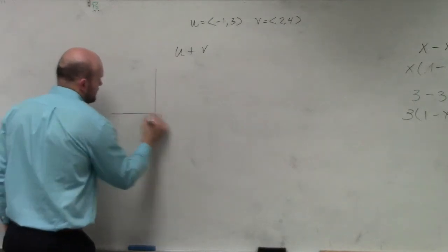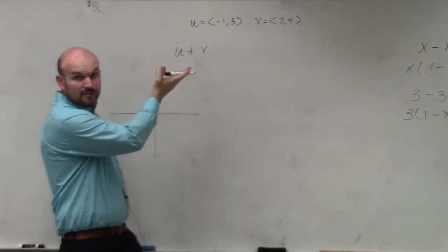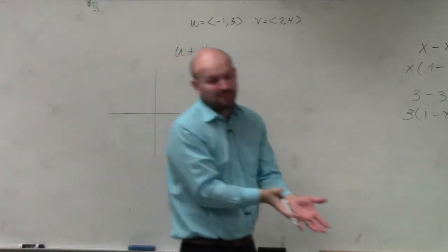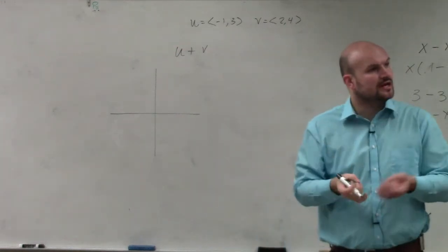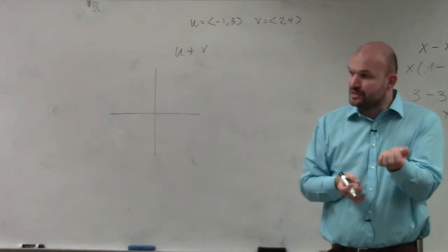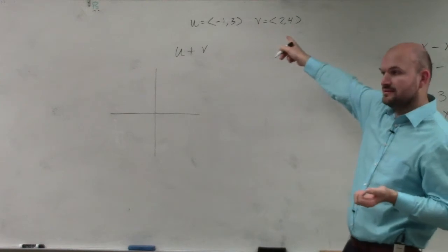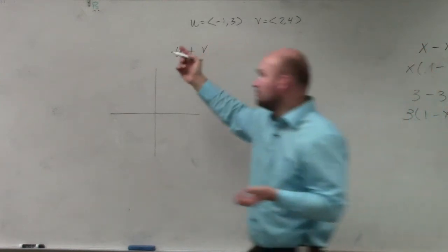So if we were going to go and graph these, again, these are in component form, right? We know component form, if you remember from last class, is a vector where we have our initial point at 0,0, and then our endpoint is at the terminal point here.